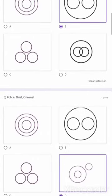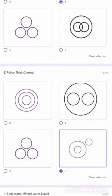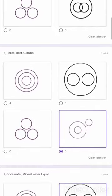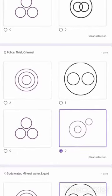Third question. Police, thief, criminal. Criminal and thief come in one category and police are the other category.